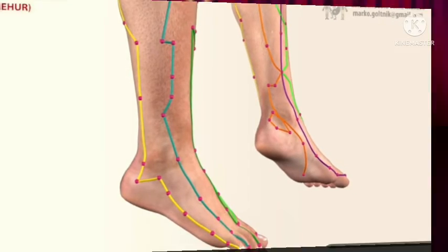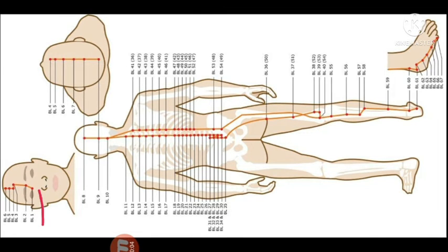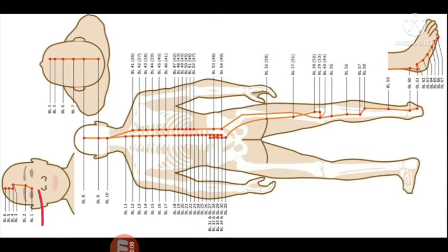This is the UB meridian. In UB meridian we have total 67 points. It starts at the corner of the eye, BL1. We also call it bladder meridian or urinary bladder meridian.